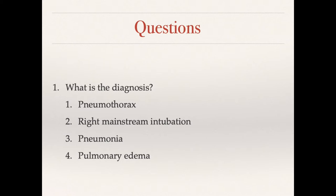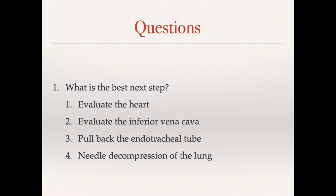The diagnosis is right main stem intubation. We know how to fix that: deflate the cuff of the tube, pull back maybe a centimeter, see where we're at, re-inflate, and hopefully we're now ventilating the patient properly bilaterally. The next best step of management is to pull back the endotracheal tube.